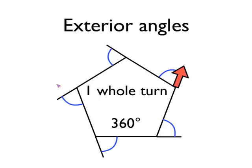Which, as we know, is 360 degrees. So that's why exterior angles in a polygon always add up to 360 degrees.